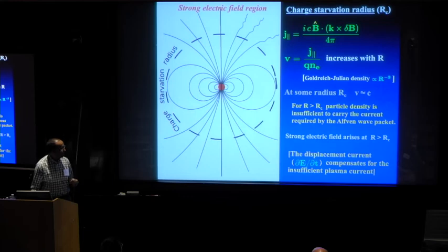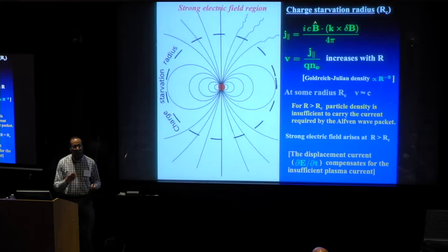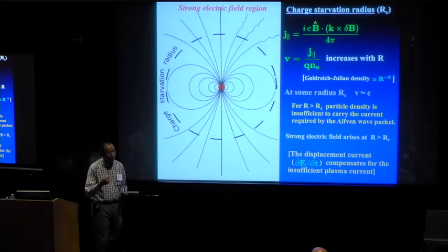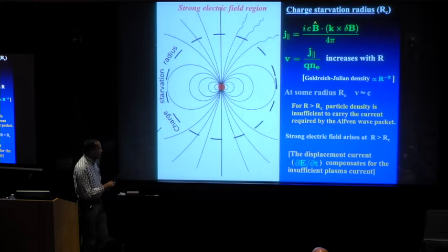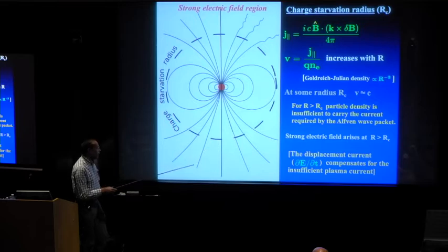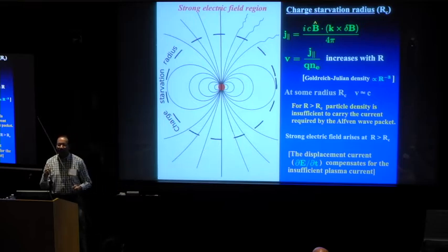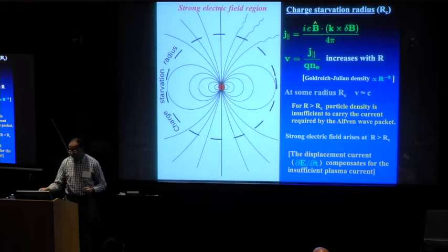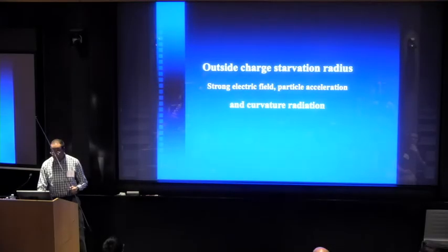So what happens at that stage is that electric field develops. To be precise, it is the time derivative of the electric field. The displacement current now is compensating for the deficit of the plasma current. So you have an electric field that develops, a strong electric field that develops outside of this charge starvation radius. And the direction, a component of this electric field, just like the current density, is along the magnetic field lines.